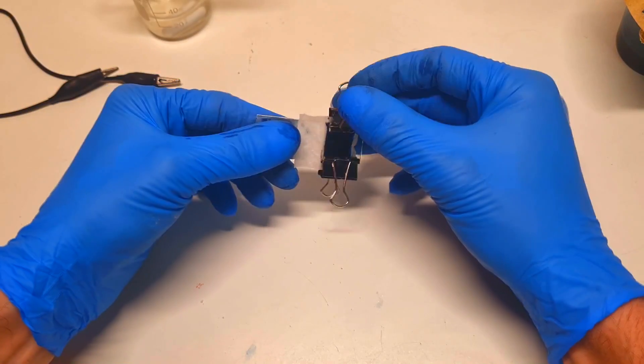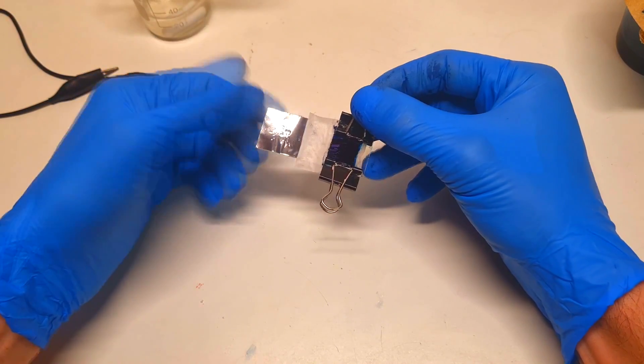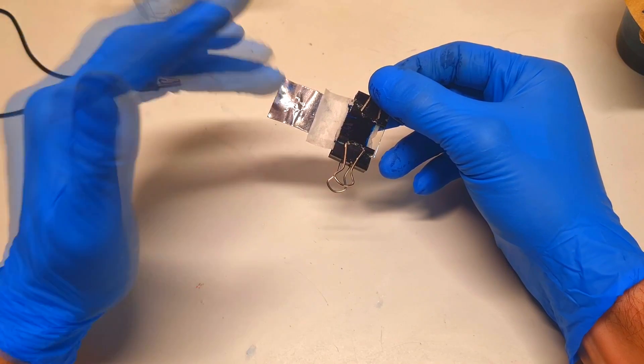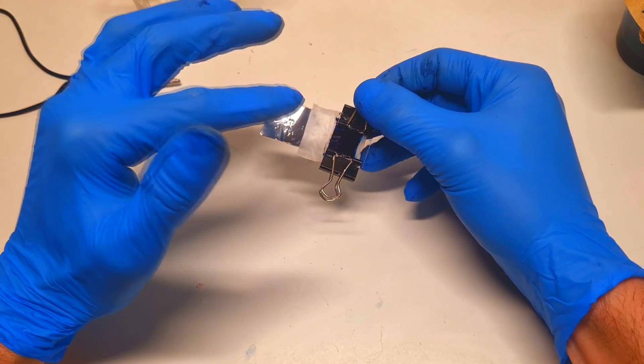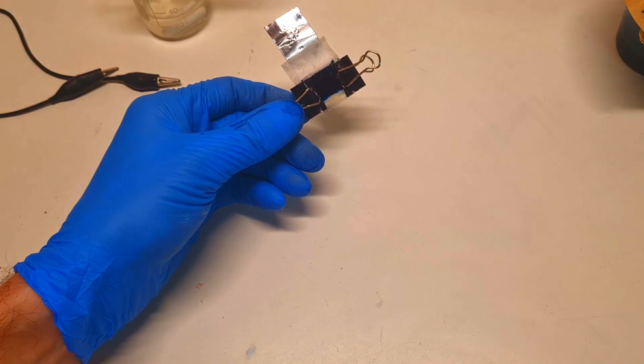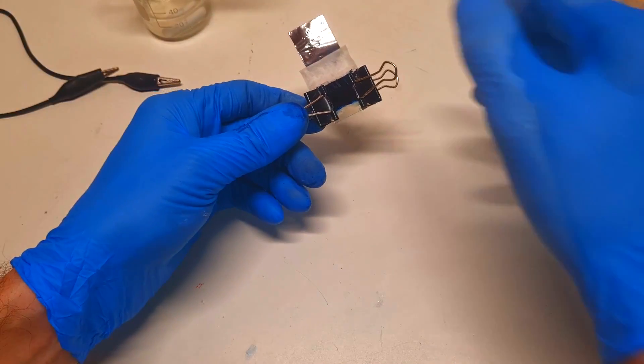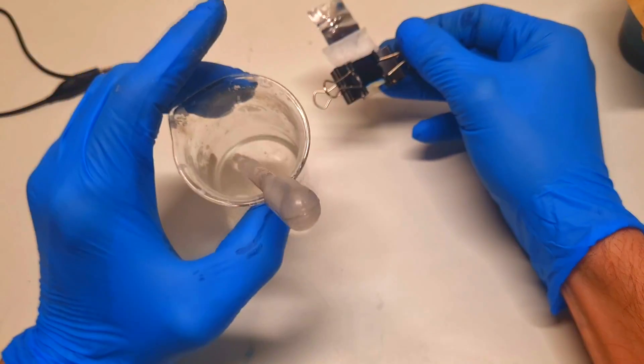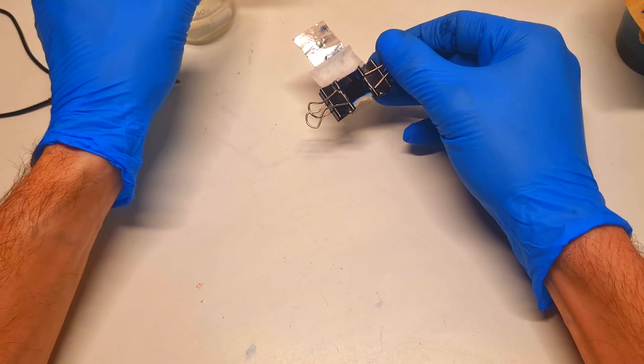So here I have my standard self-charging cell, which is simply made from aluminum foil for the negative electrode. Then for the separator, I use some kitchen paper with potassium chloride electrolyte.